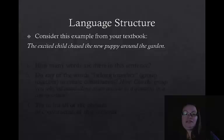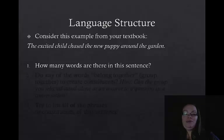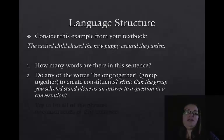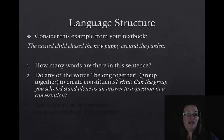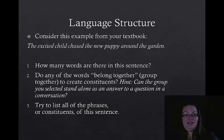Consider this example from your textbook: The excited child chased the new puppy around the garden. How many words are there in this sentence? We can count them one word at a time. But when we look at this sentence, what other words might belong together to create some sort of grouping? We call these constituents. You can group things — maybe they're a standalone as the answer to a question. For example, who chased the new puppy around the garden? The answer would be the excited child. So it appears that the excited child is grouped together. Try to list the phrases or constituents of this sentence.